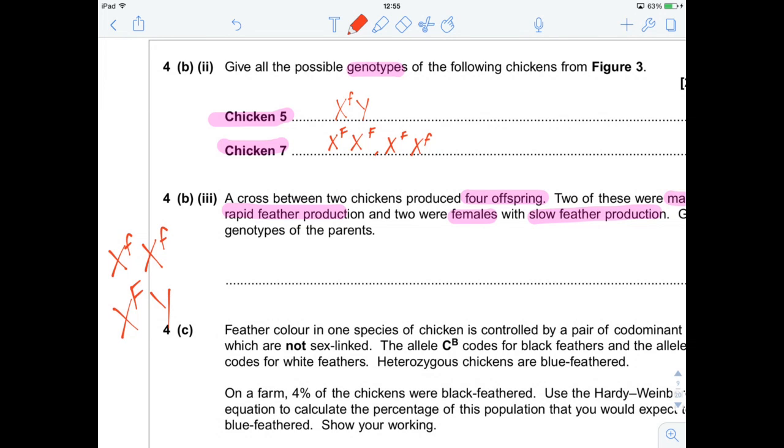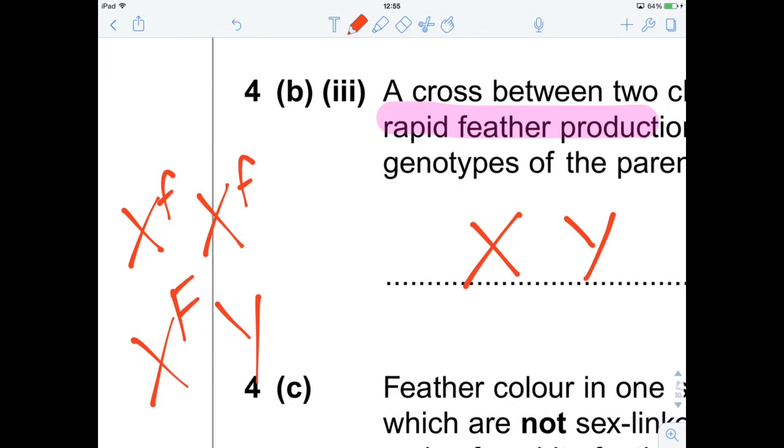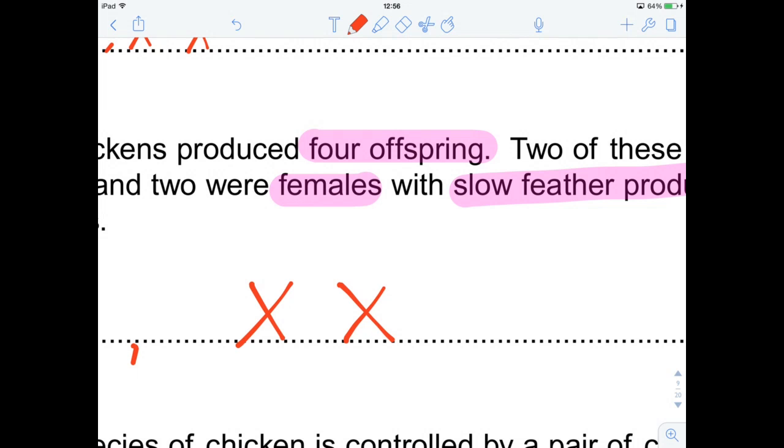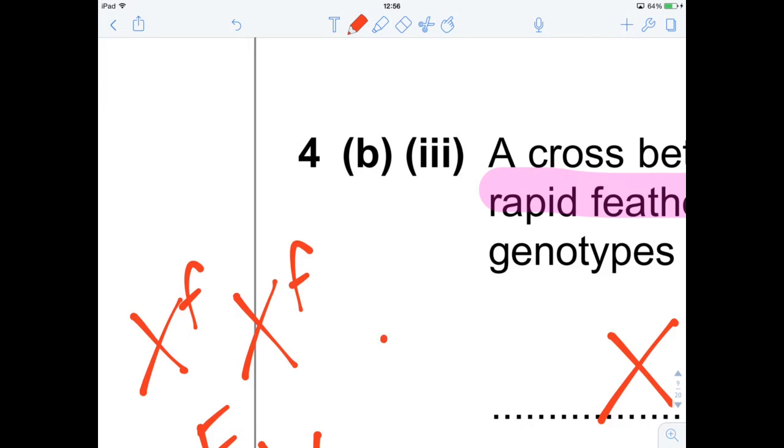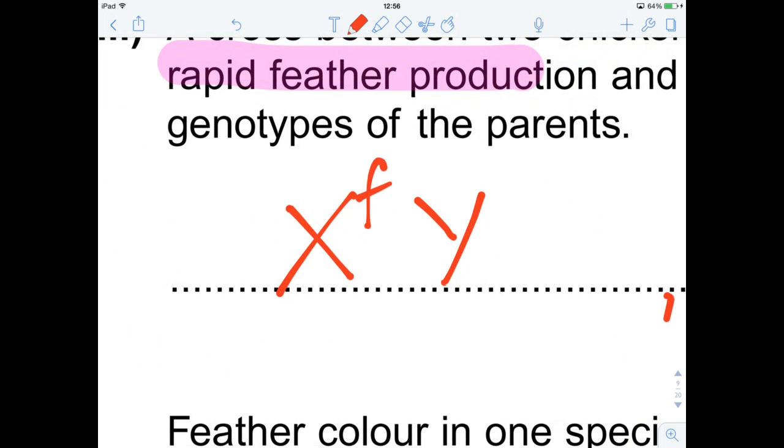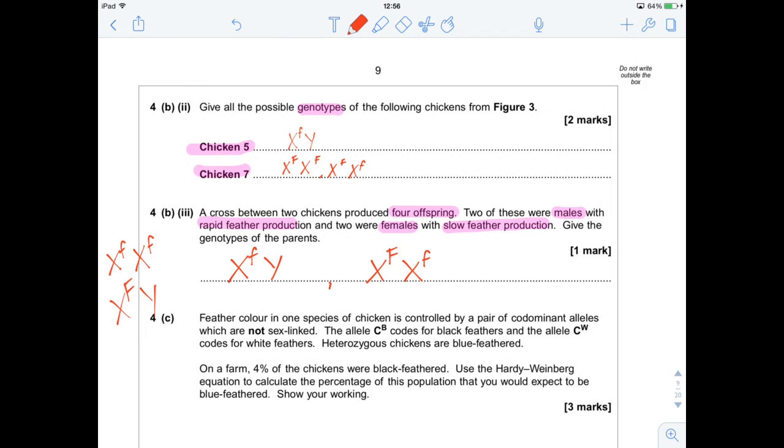Basically, we need to rearrange these offspring to get the parents. We've got to have one female parent, and we've got to have one male parent. Both parents, from the X chromosome, will have to have one capital F and one lowercase f. And then, looking at this offspring here from the female, it's going to have to be recessive. So it's just a case of rearranging, effectively, the gametes from the offspring, and then re-jigging them to the parents. It's not too tricky. Treat it more like a logic puzzle than a biology question.